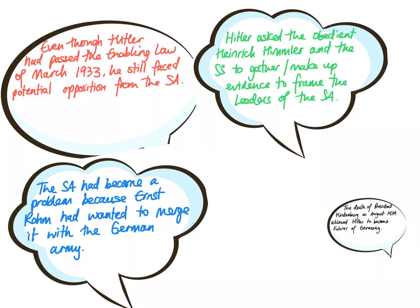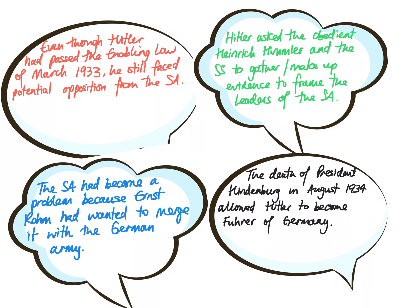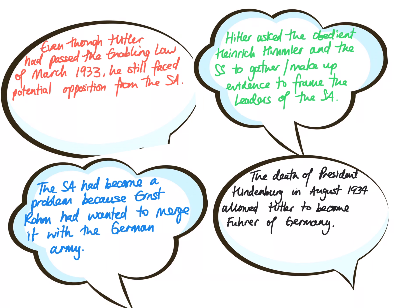With the removal of the SA leaders — 85 were shot, including leaders from other political parties that had existed in the past — the death of President Hindenburg in August 1934 allowed Hitler to become the Führer of Germany.